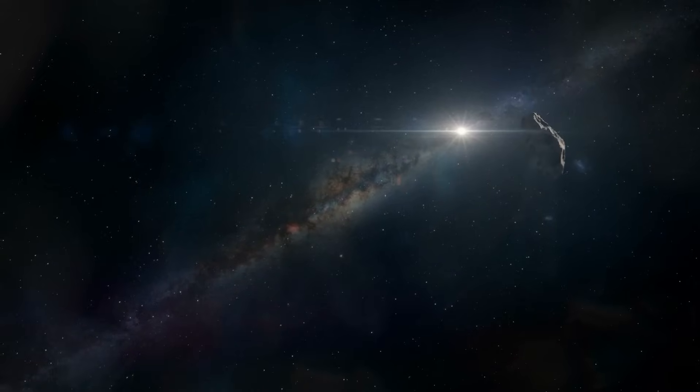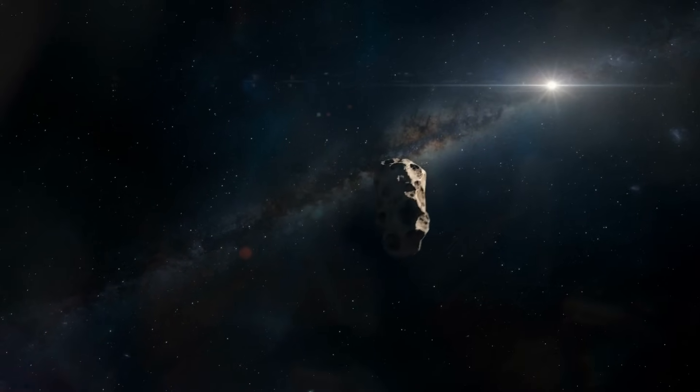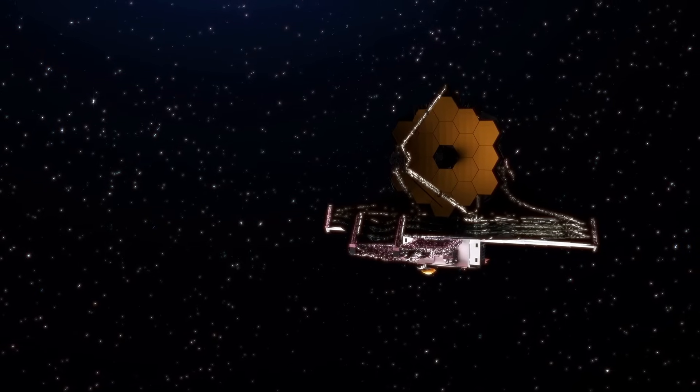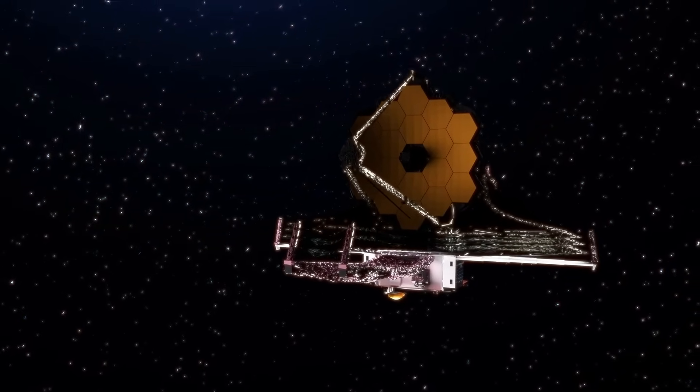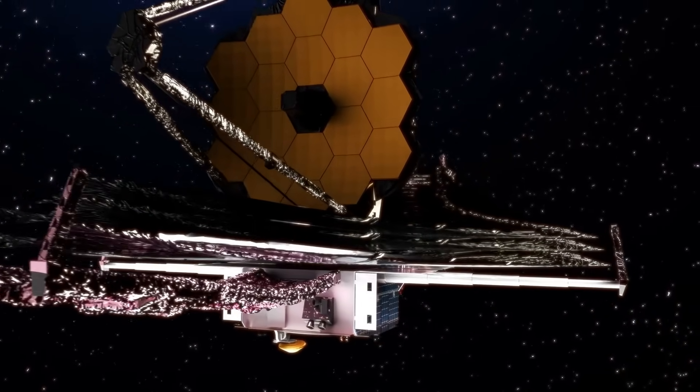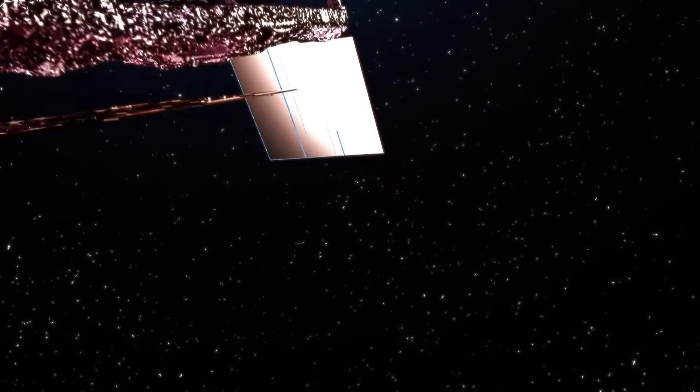Speed adds another twist. 3i Atlas is traveling at an astonishing 41 miles per second, about 66 kilometers per second. That's more than double the record of the fastest spacecraft humanity has ever constructed. NASA's Parker Solar Probe, a marvel of engineering, reaches speeds just over 19 miles per second at its peak. 3i Atlas leaves even our boldest creations far behind. And yet it shows no evidence of propulsion. No thrusters, no exhaust plumes, no sails catching the solar wind, just raw, unaccountable velocity.